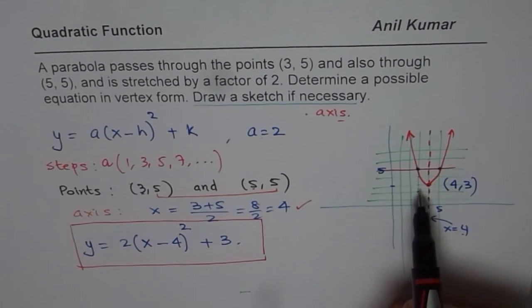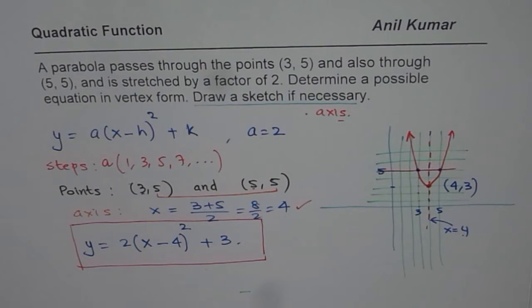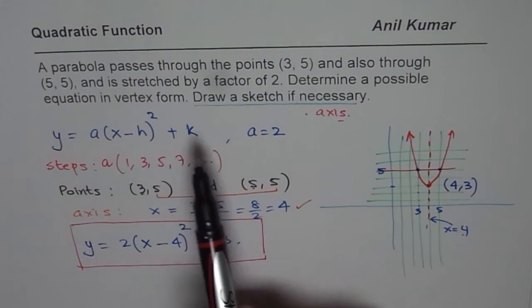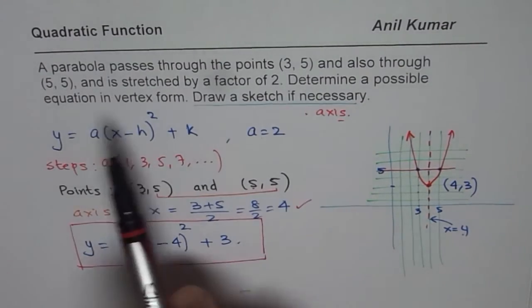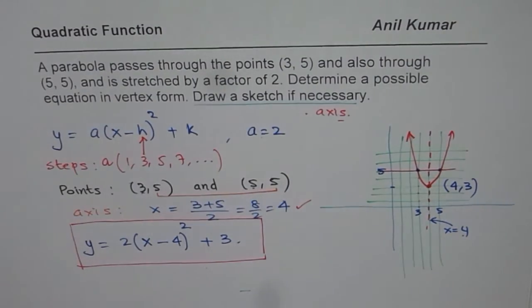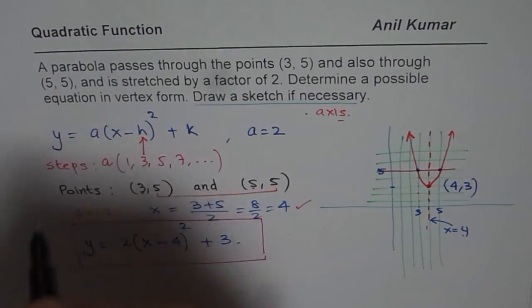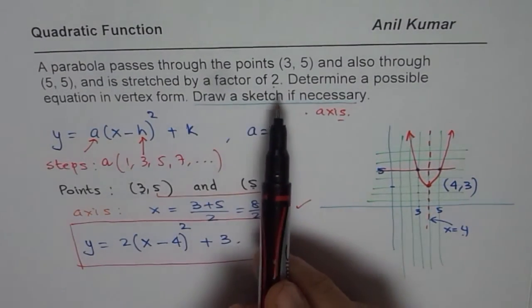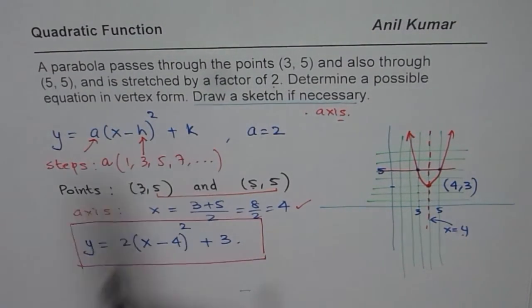We will take up another example where that will not be the case and then see how to find the equation. But in any case, what you can understand from here is that in general, you can find the equation since these two points give you the axis or one of the parameters, which is h. For sure. We already know a because we know it is 2. Since we know h and a, we can always find k. So, that is how you should be actually working on this. I hope that helps. Thank you and all the best.